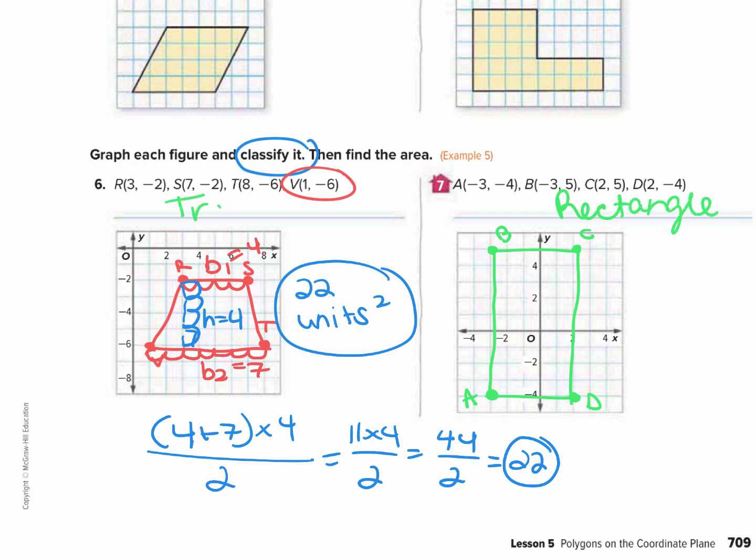We forgot to classify this one, let's just write trapezoid. So now we want to find the area, so we just do base times height, or length times width. We have 1, 2, 3, 4, 5, and then 1, 2, 3, 4, 5, 6, 7, 8, 9. So the area of this is 9 times 5, so 45 units squared.